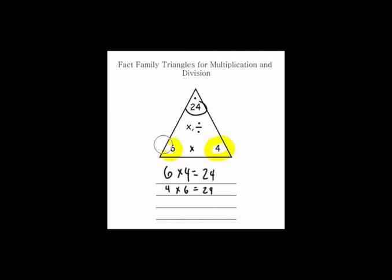But division is a little different. With division it's really just the opposite of multiplication. I'm going to start with 24 and divide by 6, and my answer is 4. I'll start with 24 again, but now I'm going to go the opposite way and divide by 4, and I will get the other number, 6. This is an example of a fact family triangle for multiplication and division.